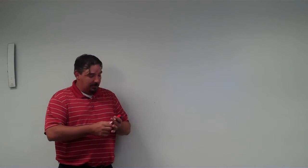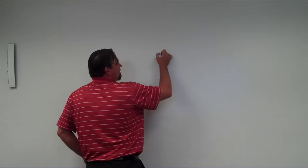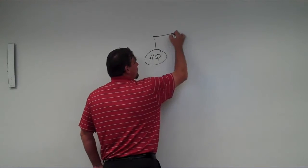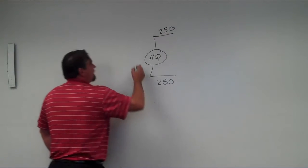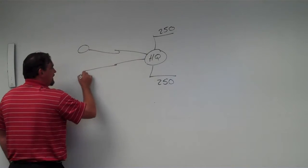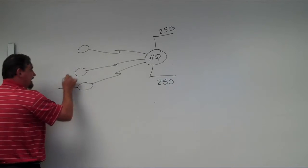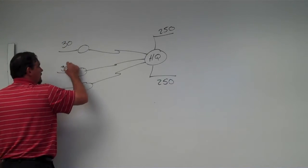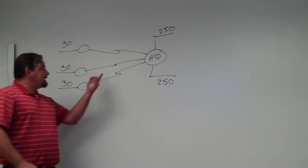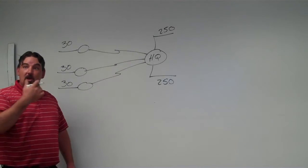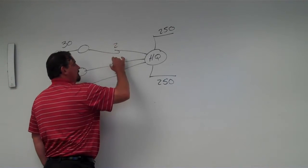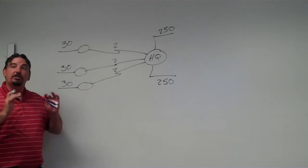The whole point of variable length subnet masking is to make sure that we only have the size of subnet that we absolutely need at each individual location. We're going to discuss the concept of having a corporate headquarters with two big subnets, each with 250 users. Then we'll have links going out to three different branch offices, each with up to 30 users, and point-to-point links in the middle needing two usable IP addresses — one on each side of the connection.